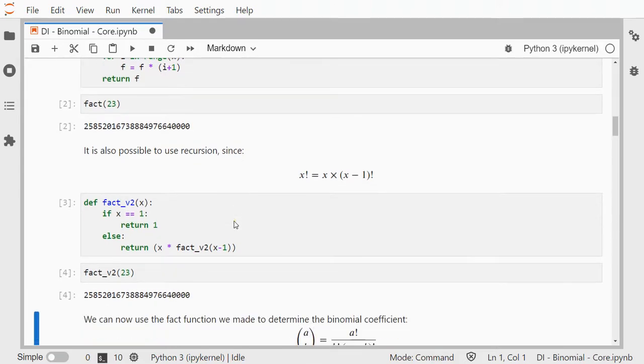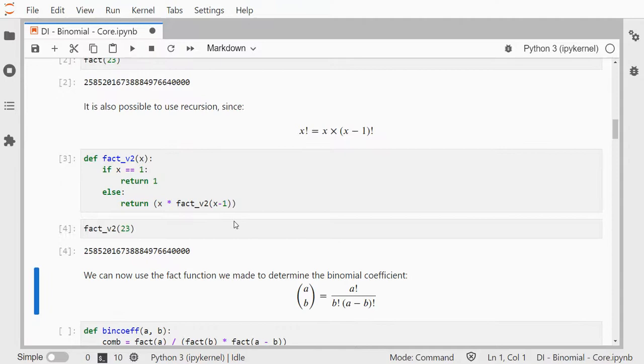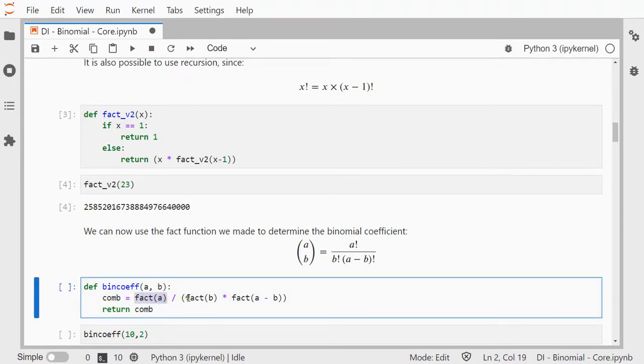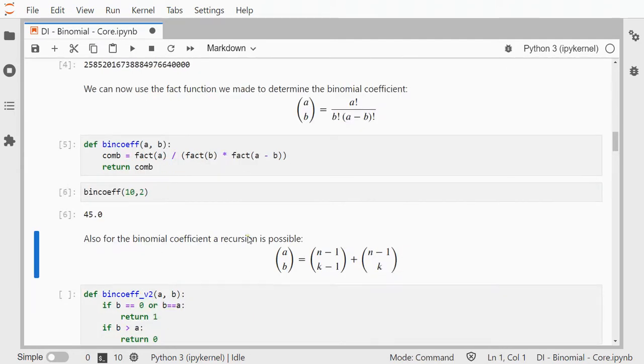And now we can actually calculate that binomial coefficient and simply say, the factorial of a and divide that by the factorial of b, that's this part, times a minus b factorial, so times a minus b factorial, and then return the result. So if I do this, I get the binomial coefficient of choosing, sometimes it's called the choice version, of choosing 2 out of 10.